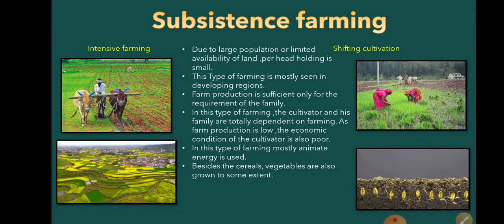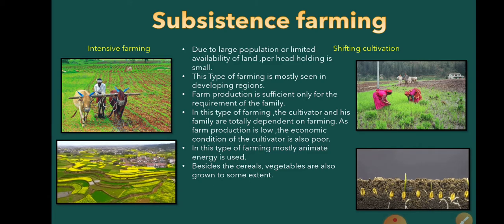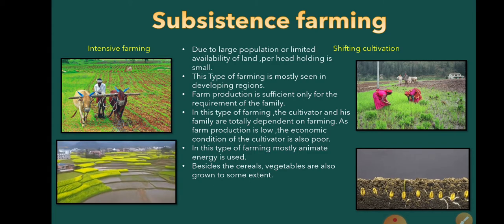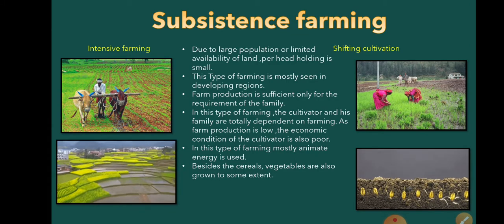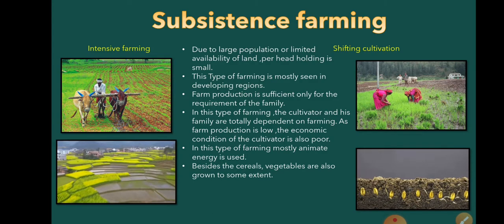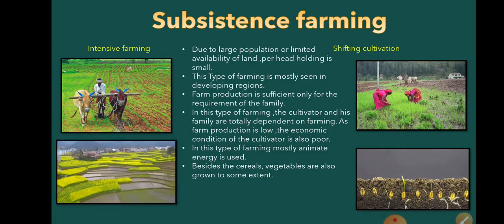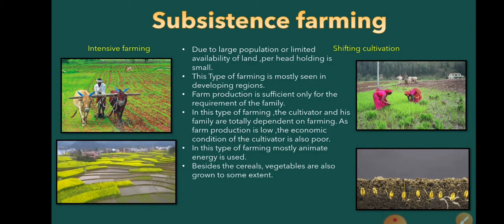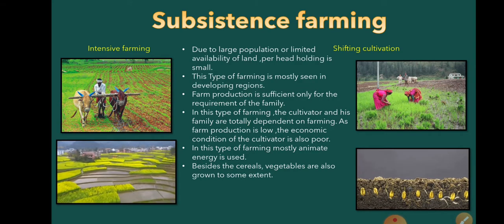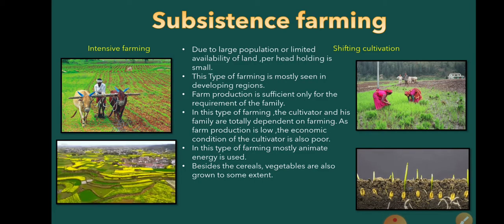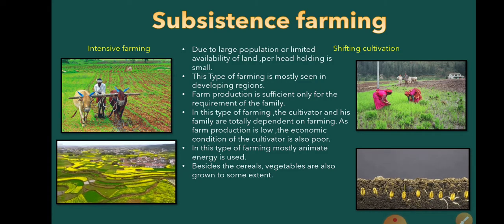Now, what is shifting cultivation? Shifting cultivation is a primitive type of cultivation practiced in the tropics and in densely forested areas or hilly tracks. The farmer initially selects a piece of land in the forest. In order to make it cultivable, he clears the land by cutting down trees, plants, removing shrubs and grass. Once the cut trees dry out, he burns them. Then he starts sowing on that area. As the nutritional value of the soil decreases due to continuous cultivation, they move to another place. So that is called shifting cultivation — shifting from one place to another as the nutrition value decreases.